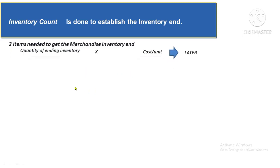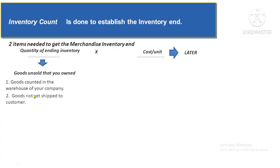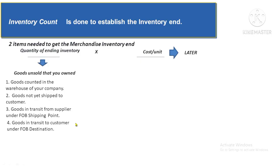The quantity of inventory should be all unsold goods that your company owns. It includes: (1) goods counted in your warehouse; (2) goods not yet in the warehouse but still your company's property, such as those in the shipping or packaging area; (3) goods still in transit from your supplier under FOB Shipping Point — and if the problem is silent, assume FOB Shipping Point; (4) goods sold but still in transit to customers under FOB Destination; and (5) unsold goods sent to consignees.